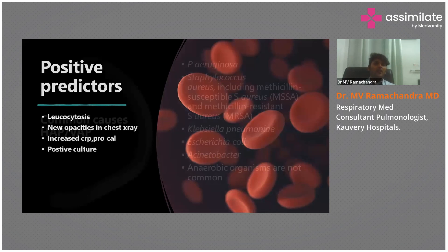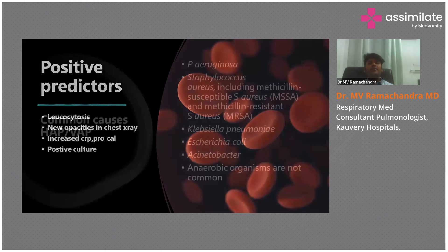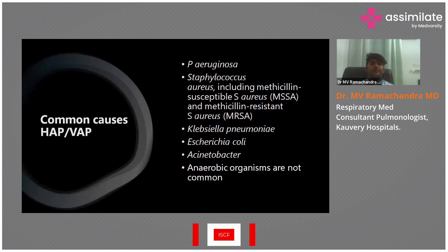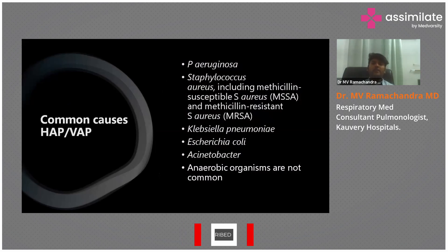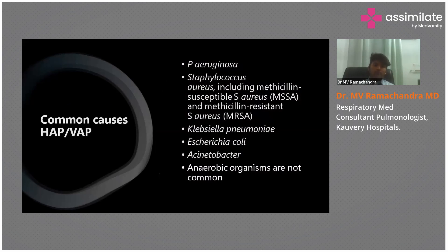The most common causative organisms for HAP and VAP are Pseudomonas aeruginosa, Staphylococcus aureus (methicillin-sensitive or MRSA), Klebsiella pneumoniae, Escherichia coli, and Acinetobacter baumannii. Anaerobic organisms are more commonly involved in aspiration pneumonia.